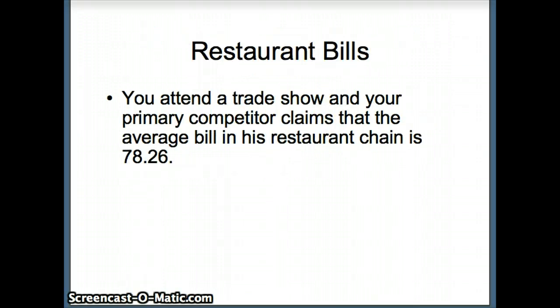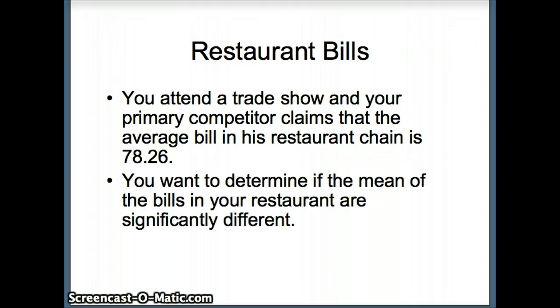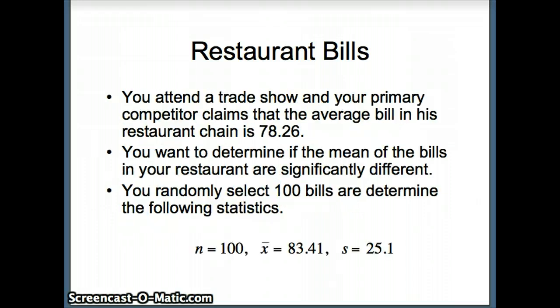Next, we look at restaurant bills. You attend a trade show and your primary competitor claims the average bill in his restaurant chain is $78.26. You want to see how your restaurant compares. You'll ask if the mean of the bills in your restaurant is different from his. You randomly select 100 bills from your restaurant.